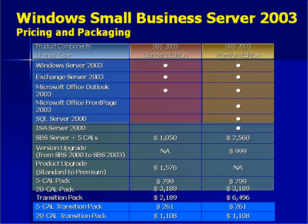Microsoft Small Business Server comes in two editions: Standard and Premium. The Premium Edition has everything that comes with Standard, but includes ISA Server as well as SQL Server. The Standard Edition is specifically targeted at those looking for their first server, and is about half the price of the Premium Edition. If you need to, you can always upgrade from Standard to Premium at any time.